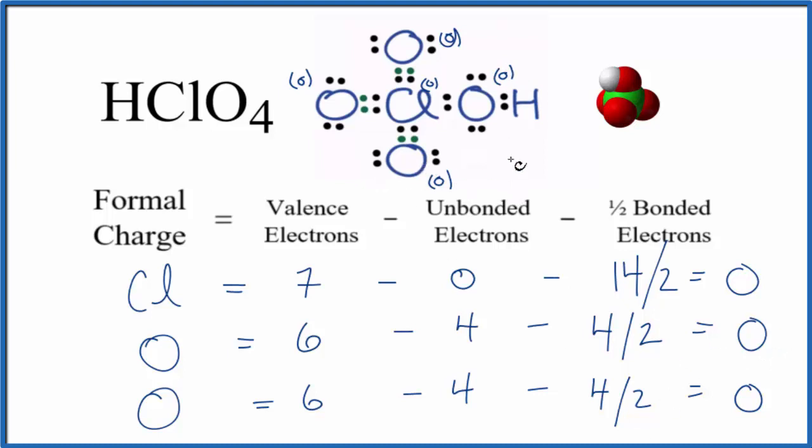So since these are all 0, this really is the most likely or favorable Lewis structure for HClO4. So formal charges are very useful for determining if we have a really good Lewis structure. If we had put the double bond here instead of on one of the oxygens, our formal charges wouldn't be all zero and then we'd know that we had a Lewis structure that needed a little bit of work.